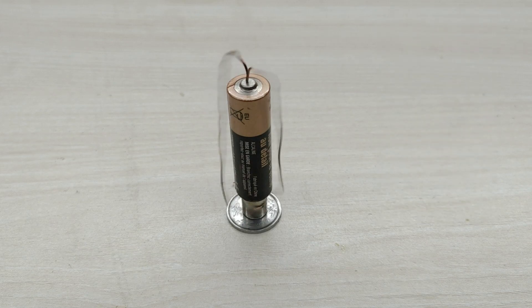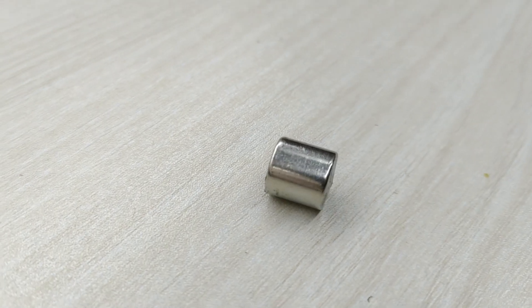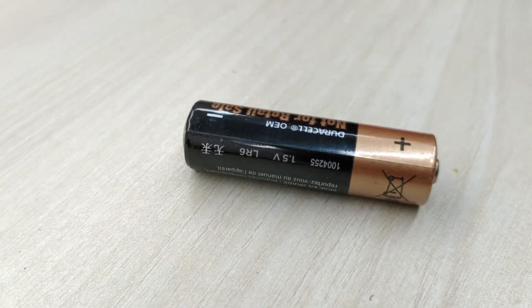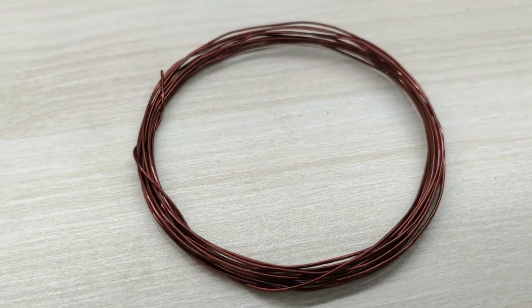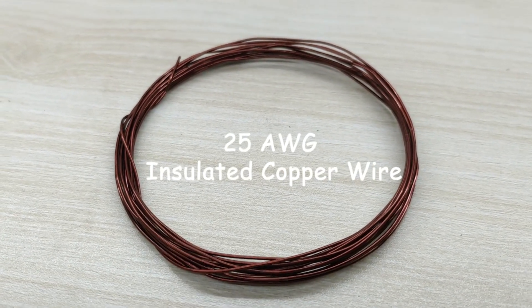For this project, you need only three components: a magnet, a double A battery, and a copper wire. Let us learn how to make the homopolar motor.